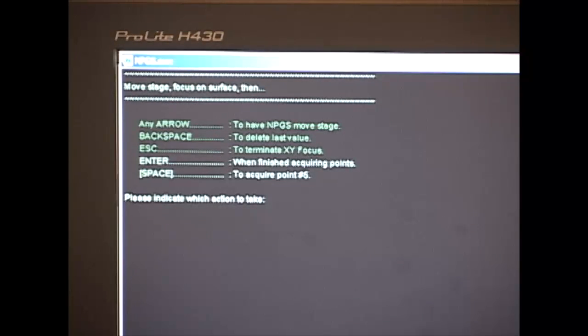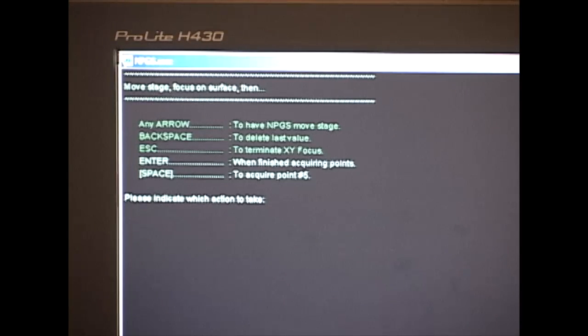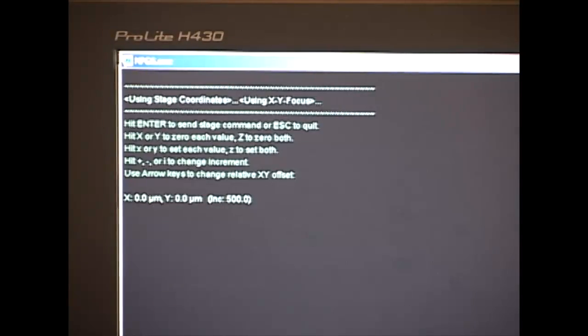Now when I've collected all four corners, I push enter, it calculates the chi-squared value for my chip. Then I push enter to use those results and exit from the direct stage control.